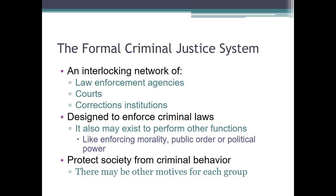The formal criminal justice system is really an interlocking series of agencies and groups. You've got law enforcement — shorthand, the police — you've got the courts, and you've got corrections. These things, in theory, work together. Do remember, though, that the criminal justice system is not just there to fight crime. It does other things: it can provide public order, it can provide political power, it can enforce moral codes. It is clearly designed, at least formally, to protect society from criminal behavior — but there are other motives here.